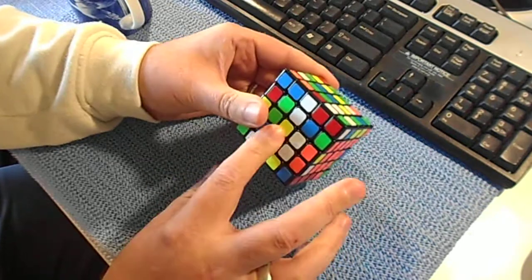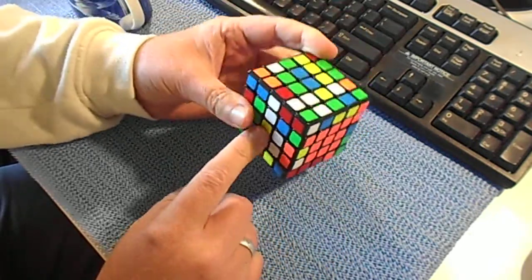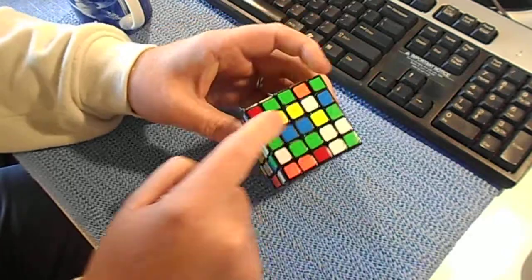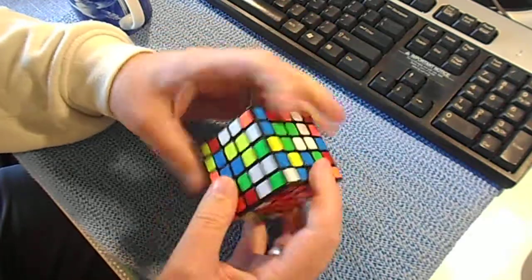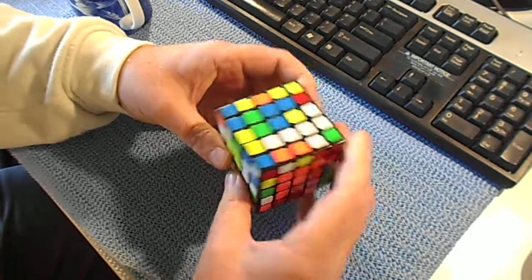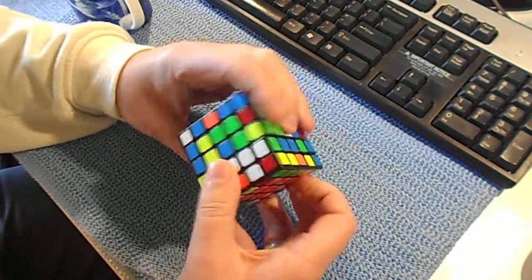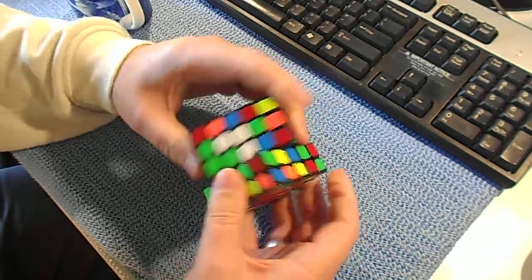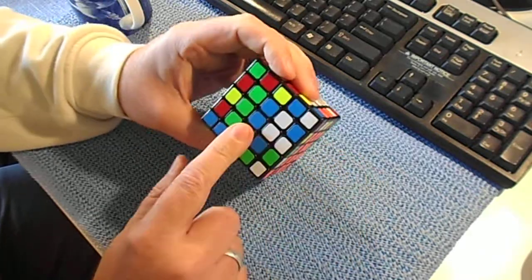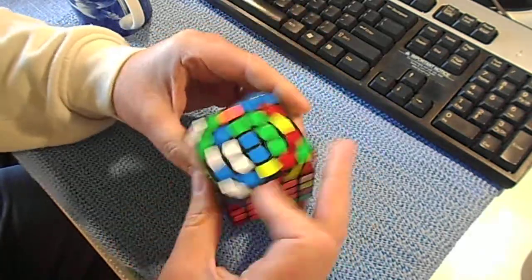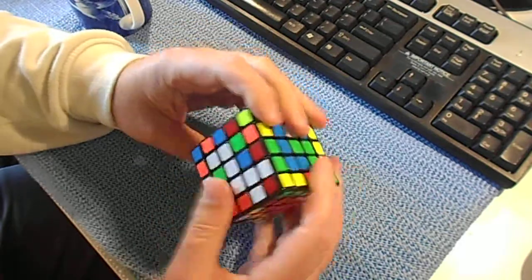And now for the last layer, I start looking for solved blocks. In this case, my yellows are almost solved, so then I go not to the opposite side but the adjacent.